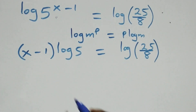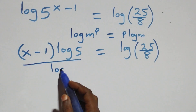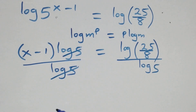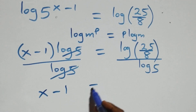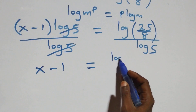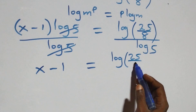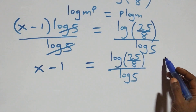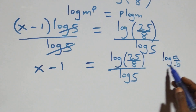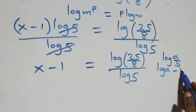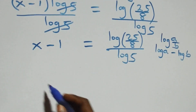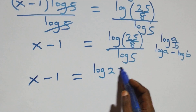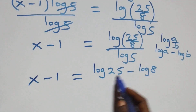Dividing both sides by log 5, the log 5 terms cancel, leaving x minus one equals log(25 over 8) divided by log 5. Applying the quotient rule log(a/b) = log a minus log b, this becomes x minus one equals log 25 minus log 8, all over log 5.